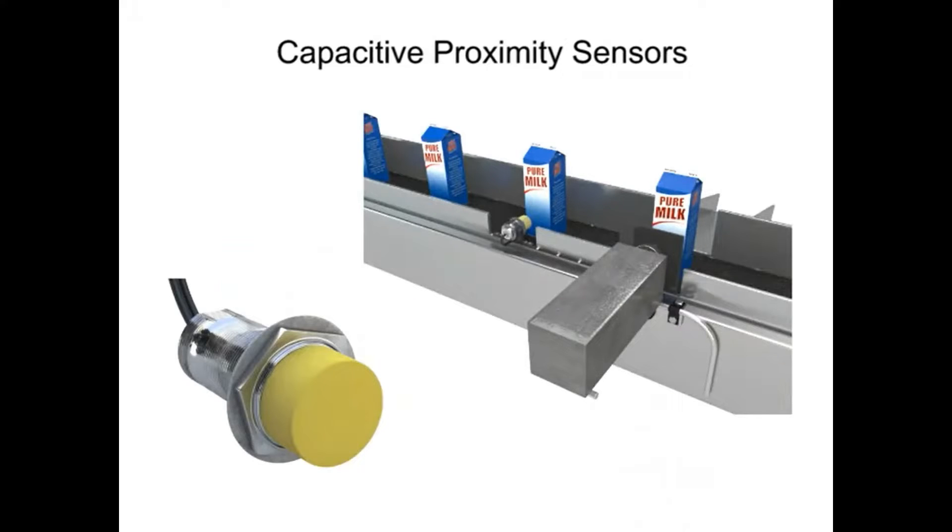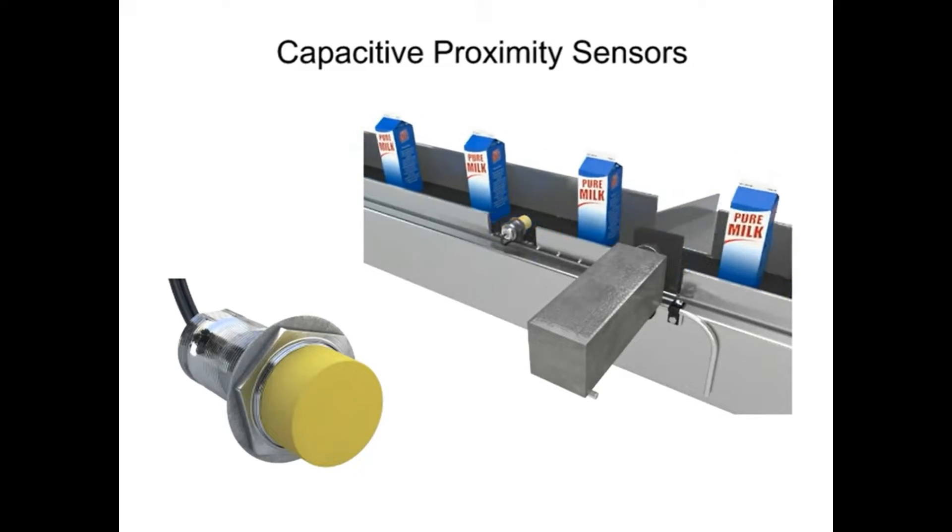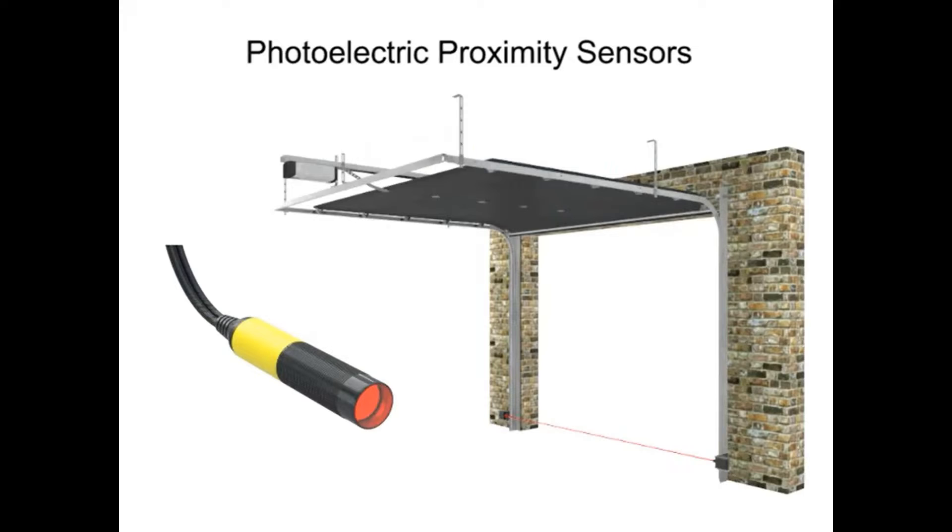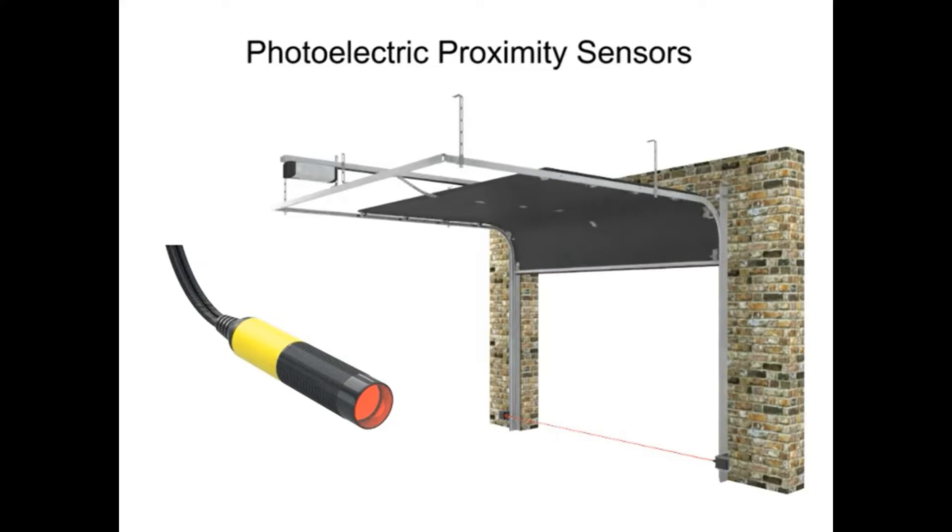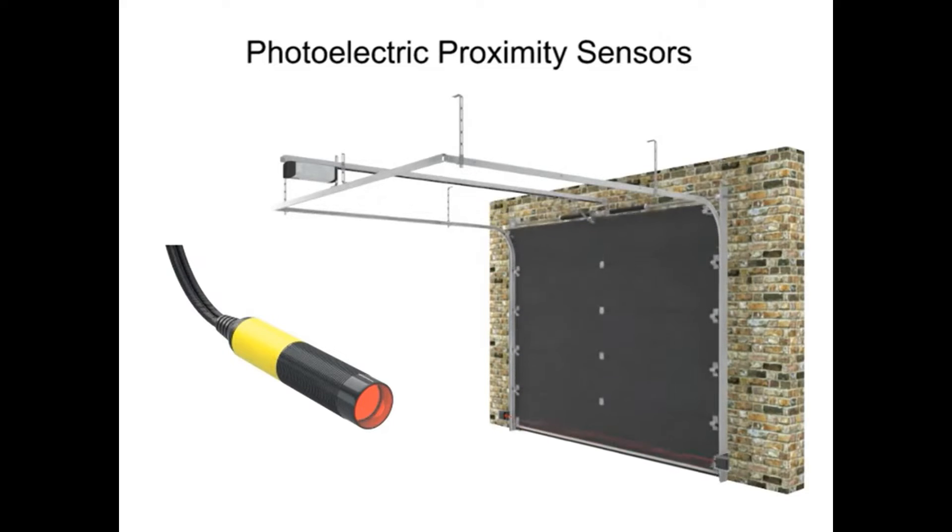Capacitive proximity sensors are used to detect liquids and other dielectric materials on the manufacturing floor. And photoelectric sensors are used in our homes and in countless other applications. Let's take a closer look at how these three common types of sensors work.